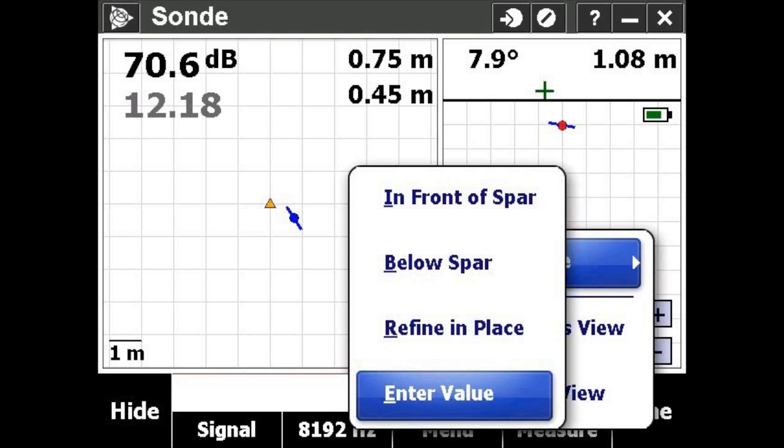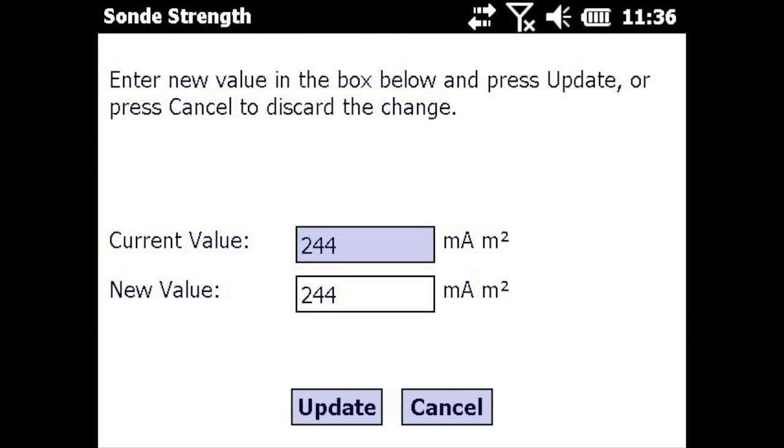The third way to calibrate a sonde is to manually enter its strength value. Select enter value and enter the value for the sonde strength, which will be found in the sonde's documentation.